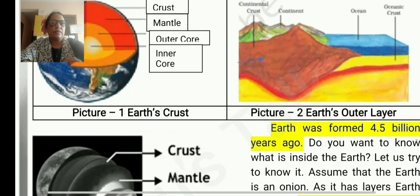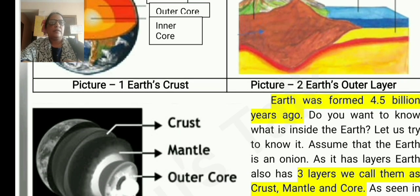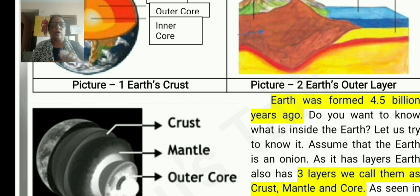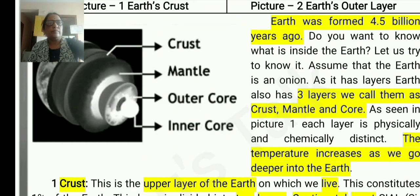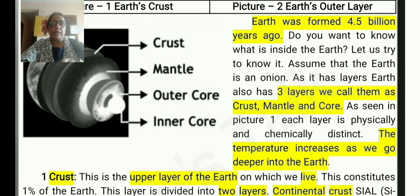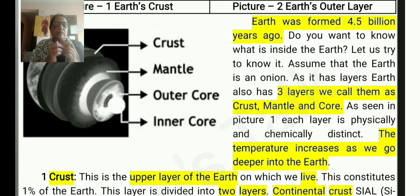The next one is the key points. Earth was formed 4.5 billion years ago. There are three layers of the earth: crust, mantle, and core. The core is divided into outer core and inner core. The temperature increases as we go deeper in the earth.